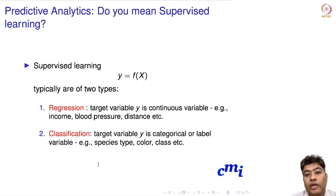In supervised learning, there are typically two types of problems. The first is called regression and the second is called classification. In regression, the target variable y is a continuous variable. For example, you want to predict someone's income, blood pressure, or the distance from one place to another place.